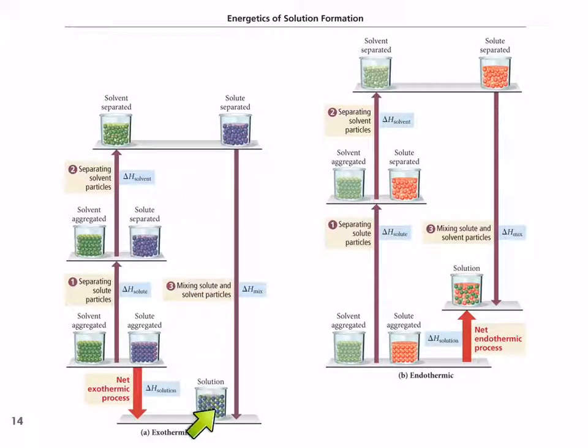And then we mix them together, we gain energy back. Energy is given off. So if the sum of these is less than this, then we have a net exothermic process.